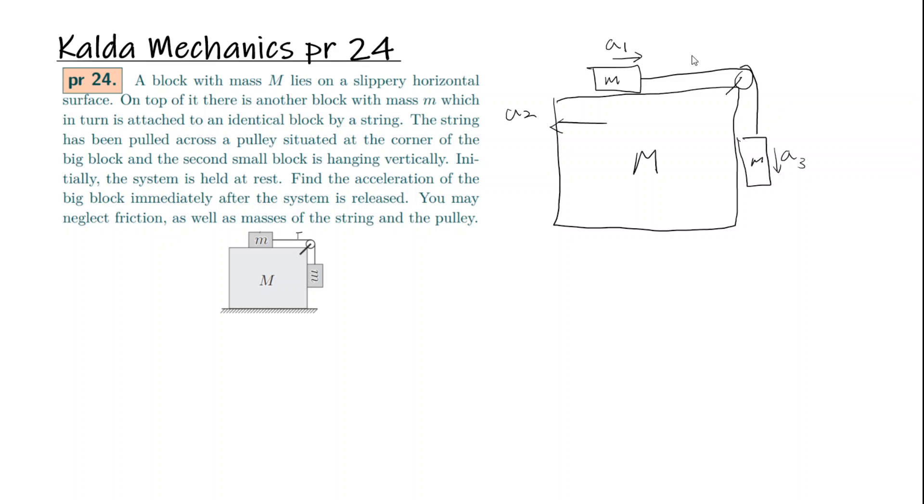If the tension in the string is T, then since there's no friction here, T equals M a sub 1 by Newton's second law. And over here, since the tension is T up here as well because the string is massless, the tension is going to be uniform throughout. So m a sub 3 is going to equal mg minus T.